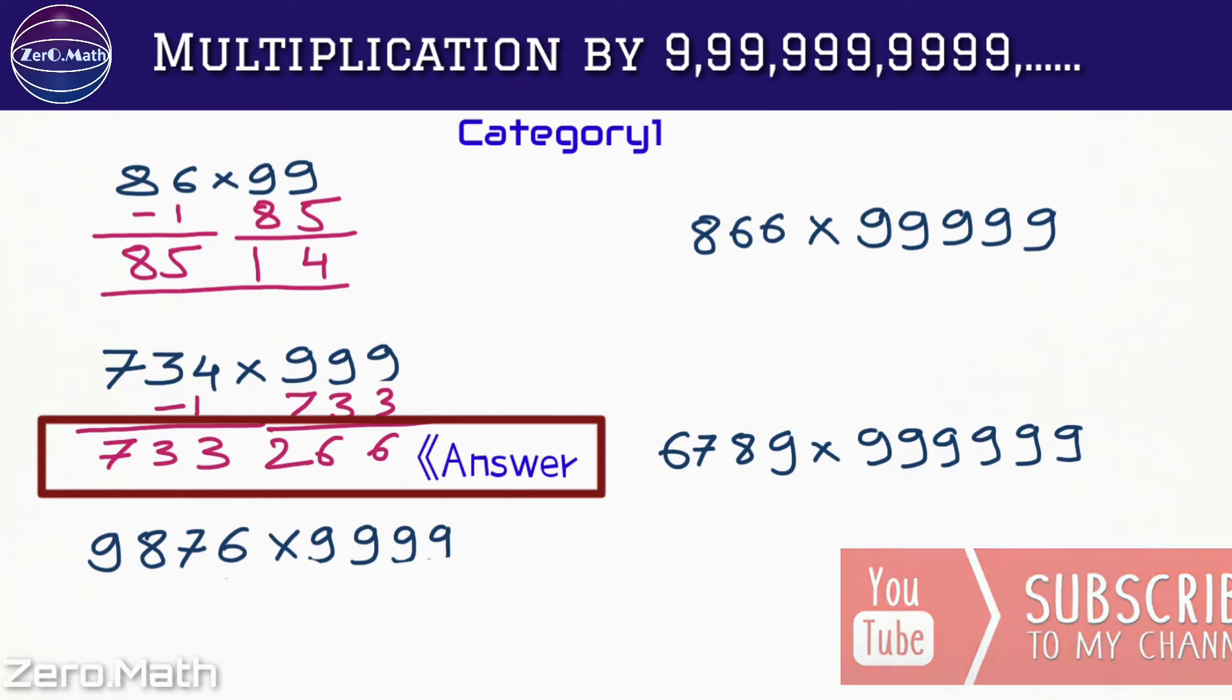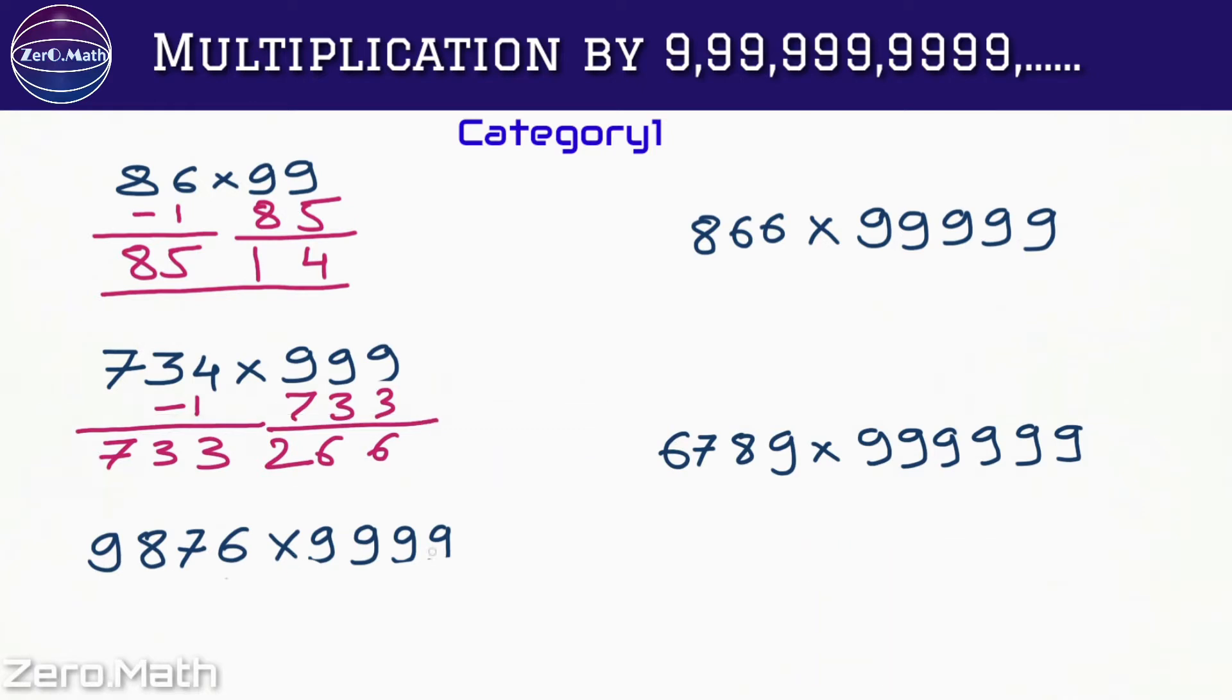Let's complicate the example. Let's take a bigger number. So 9876 into 9999. Let's subtract 1 from this 9876, we will get 9875. Subtract 9875 from 9999. We will get 4, 9 minus 7 is 2, 9 minus 8 is 1, 9 minus 9 is 0, which is our answer.